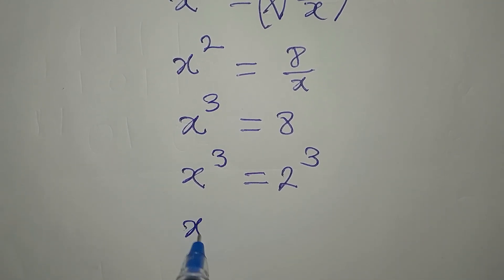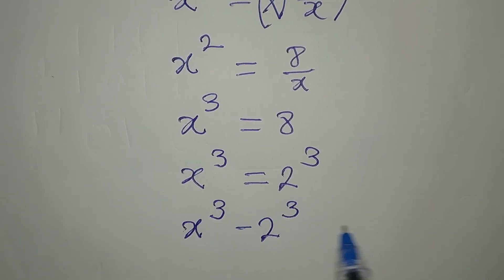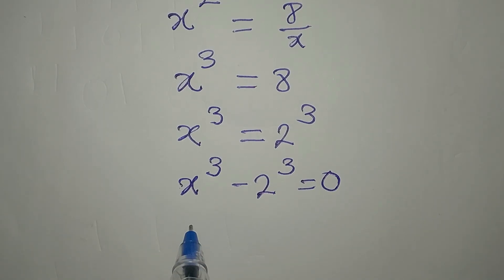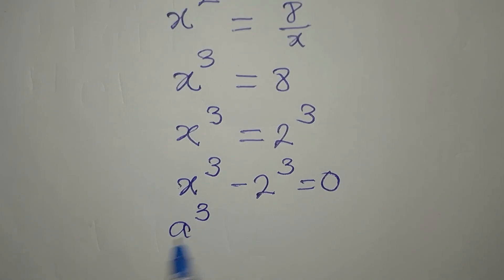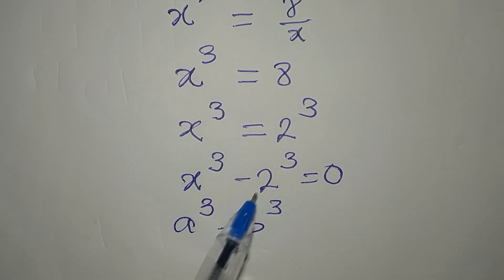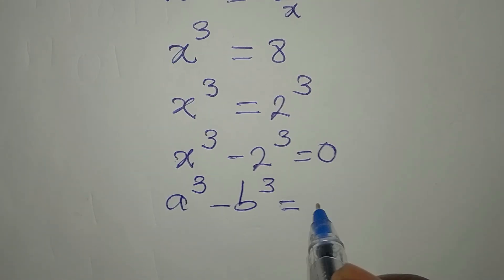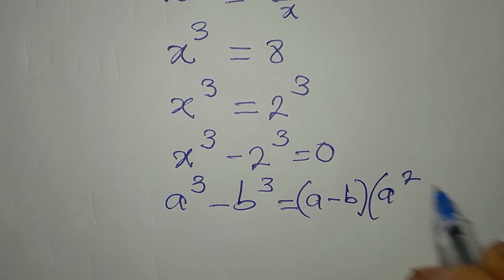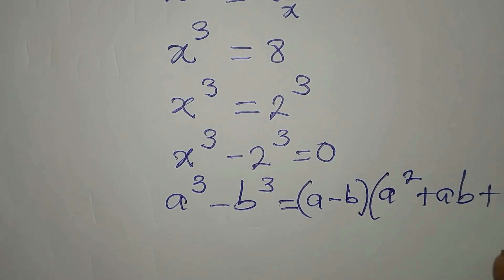Bring this to the left so that x to the power of 3 minus 2 to the power of 3 will be equal to 0. Here we have a difference of two cubes. The form a cubed minus b cubed is equal to a minus b, times a squared plus ab plus b squared.